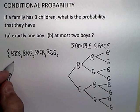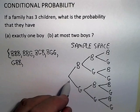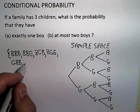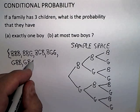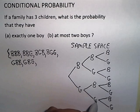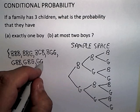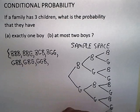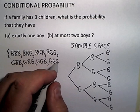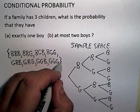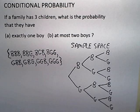Girl, boy, boy. Girl, boy, girl. Girl, girl, boy. And girl, girl, girl. And because we're assuming that the probability of having a boy and a girl are both one-half, that is an equally likely sample space for this problem.